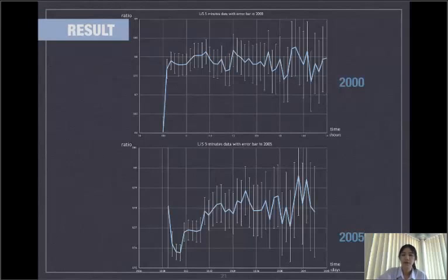Compare between two years. Both are graphed in 5 minutes from 2000 and 2005. You can see that the ratio in 2000 is increasing faster than in 2005. It's because of space weather variability around the Earth.